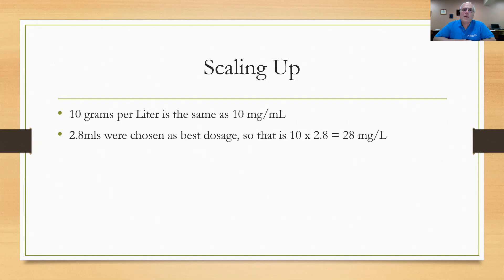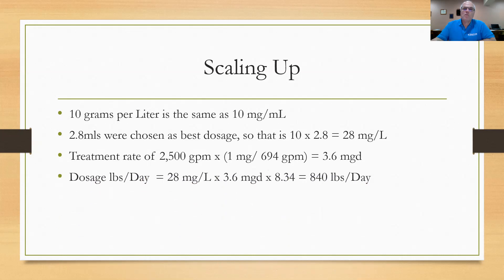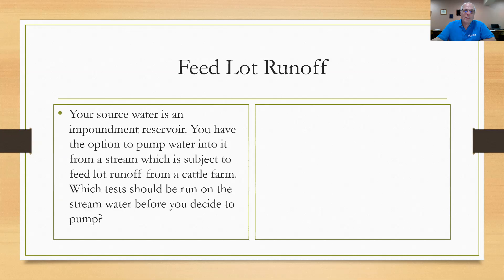10 grams per liter stock solution is the same as 10 milligrams per milliliter. So if she used 2.8 milliliters as the best dosage, that would be 10 times 2.8, or 28 mg/L dosage is best for her. So she's treating at a rate of 2,500 gallons per minute. So I'm going to convert that to MGD by dividing by 694 and I come up with 3.6 MGD. I'm going to use the standard formula for dosage. Pounds per day is going to equal 28 mg/L times the 3.6 MGD times the 8.34. So 840 pounds per day is the answer. The answer is C. All right, pretty easy. Let's go to the next one.